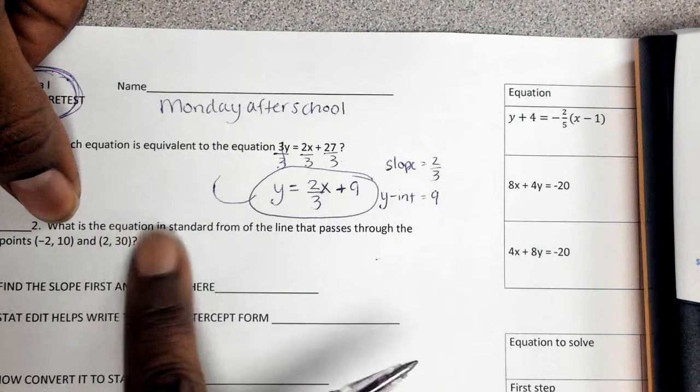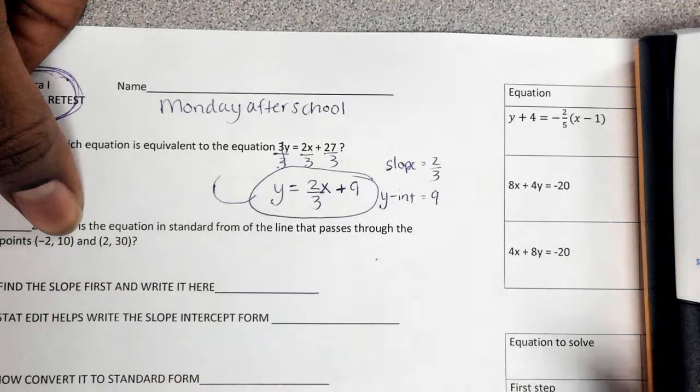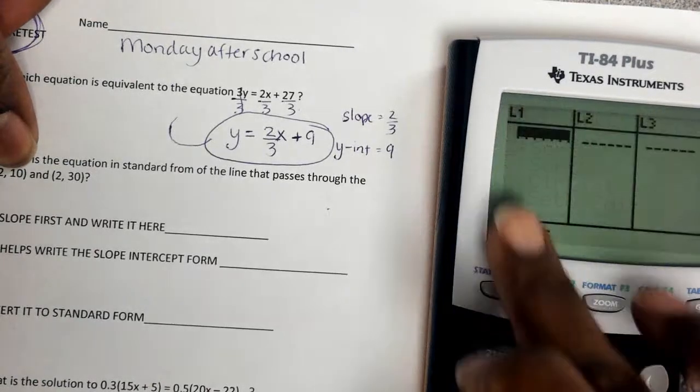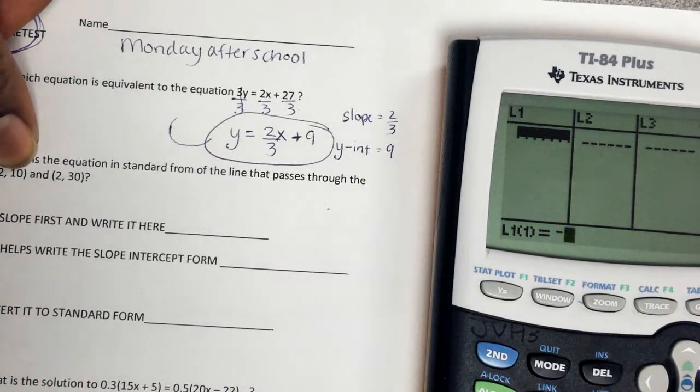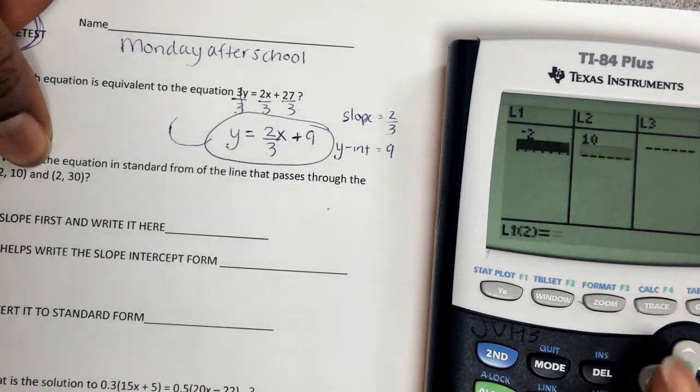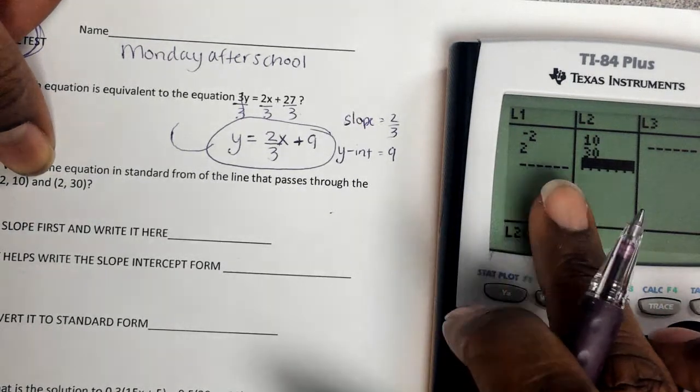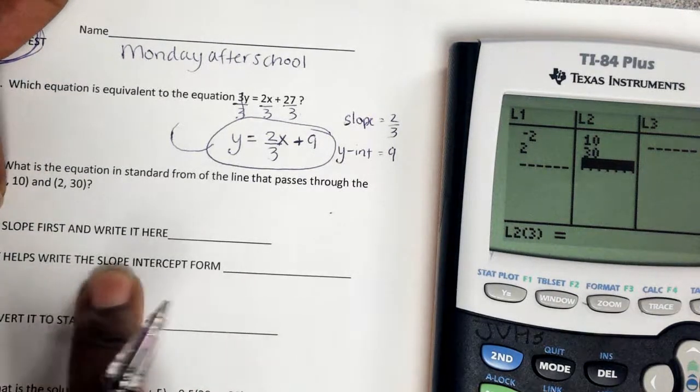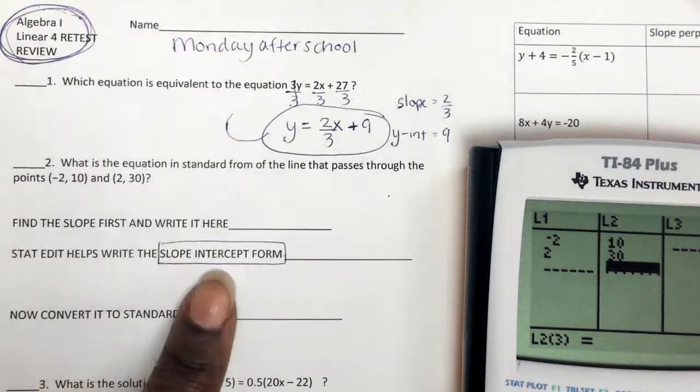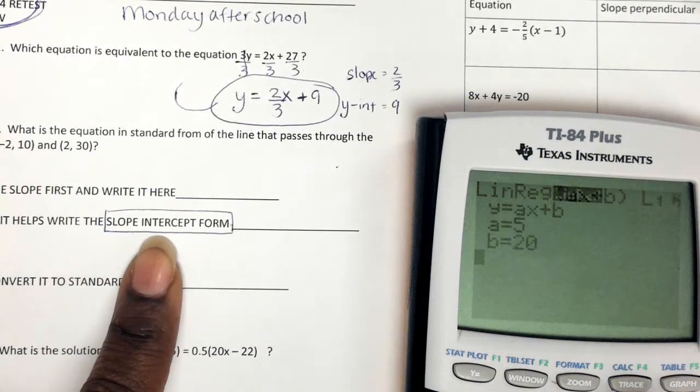Number 2 says, what is the equation in standard form of the line that passes through the points (-2, 10) and (2, 30)? My suggestion, since you are retaking the test, is to use StatEdit to help you write slope-intercept form. It says it right here on the paper. I'm just talking too fast and not thinking enough. So StatEdit, go over to Calc, helps me write it in slope-intercept form.